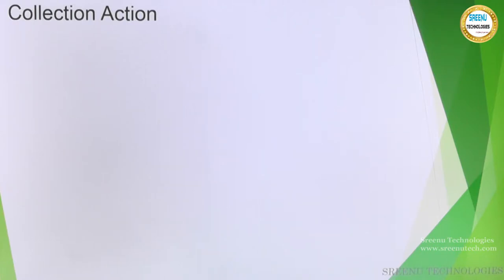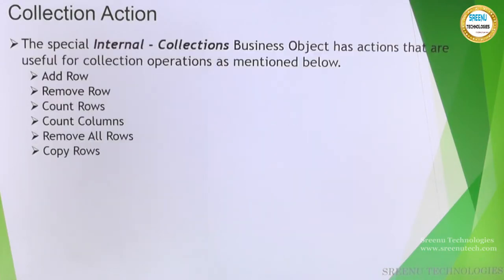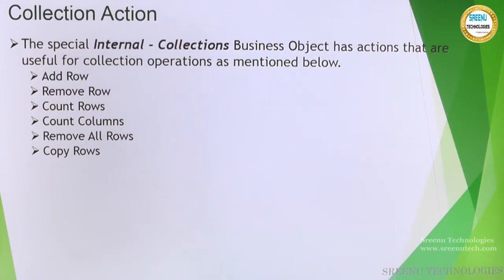What is the collection action? We have seen different stages in Blue Prism but there are a few we have not covered — that was intentional. We will take a specific use case and go through what a collection is and how it is useful. A collection is by default available as a business object, and there are operations readily available such as add row, remove row, count rows, count columns, remove all rows, and copy rows. If you need more, you can add a code stage or import external VBOs.